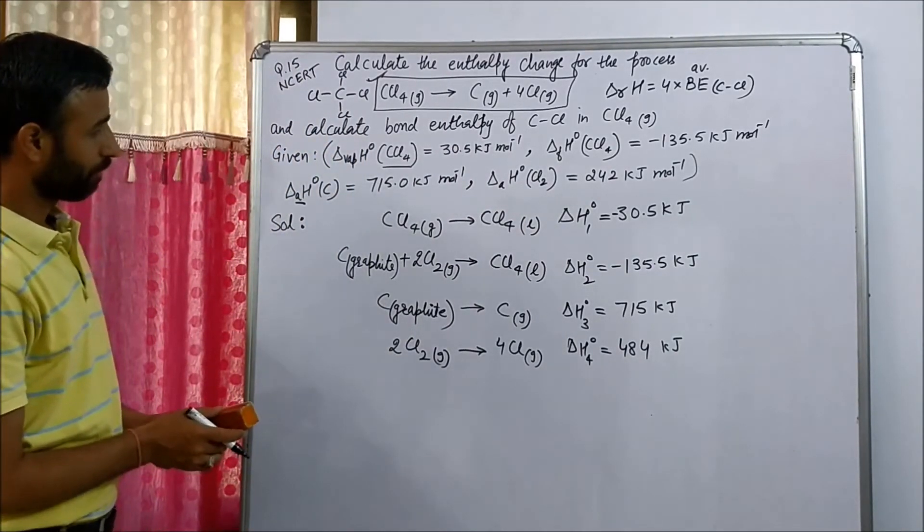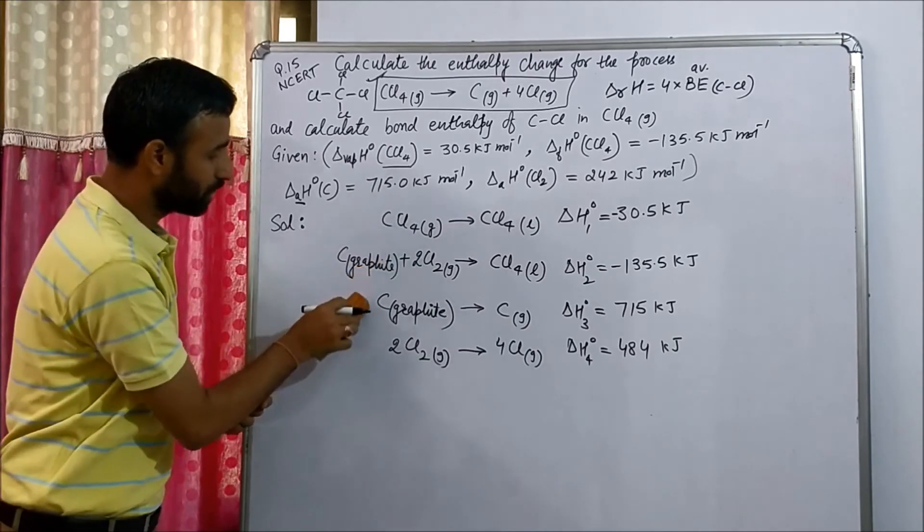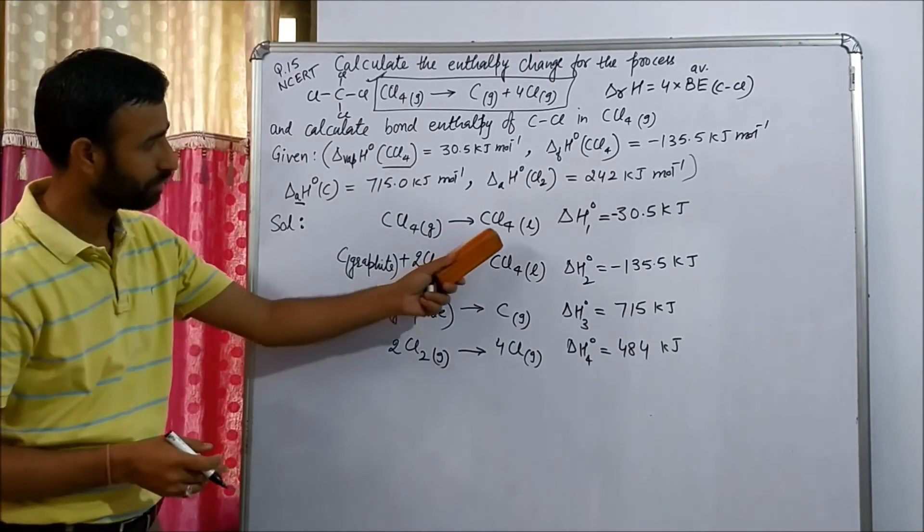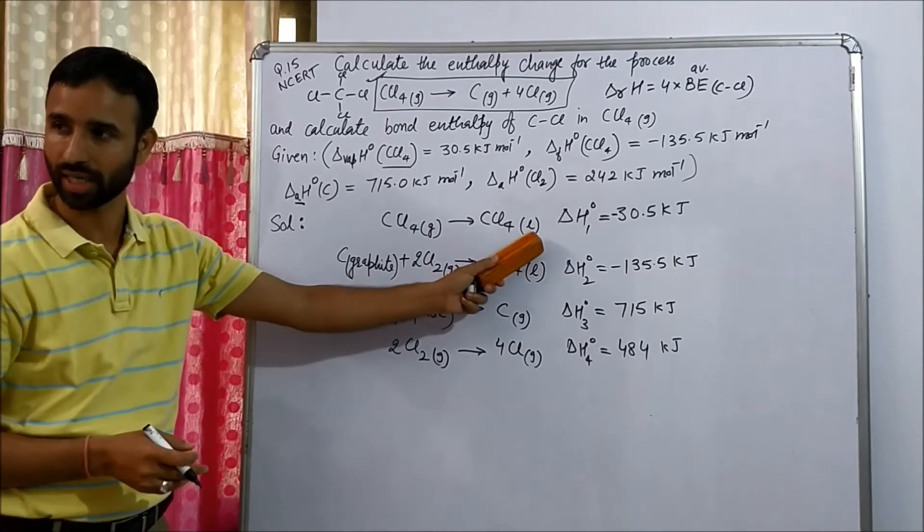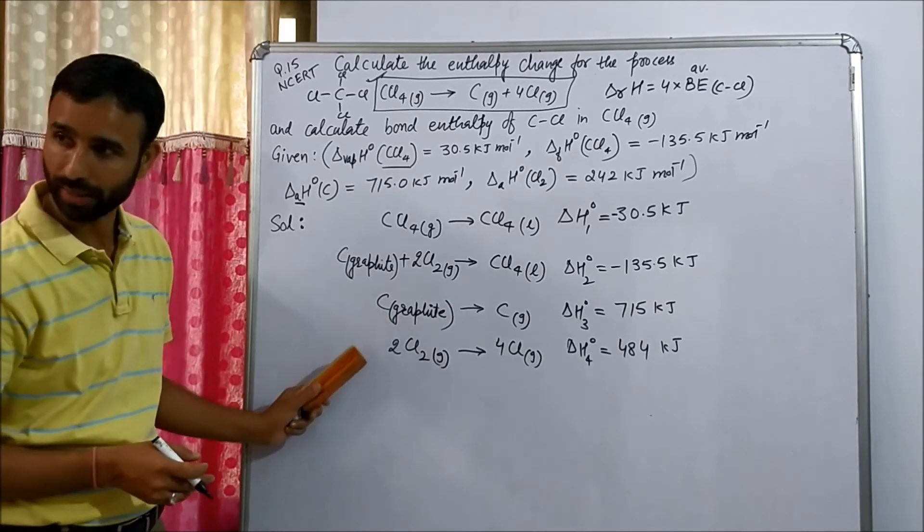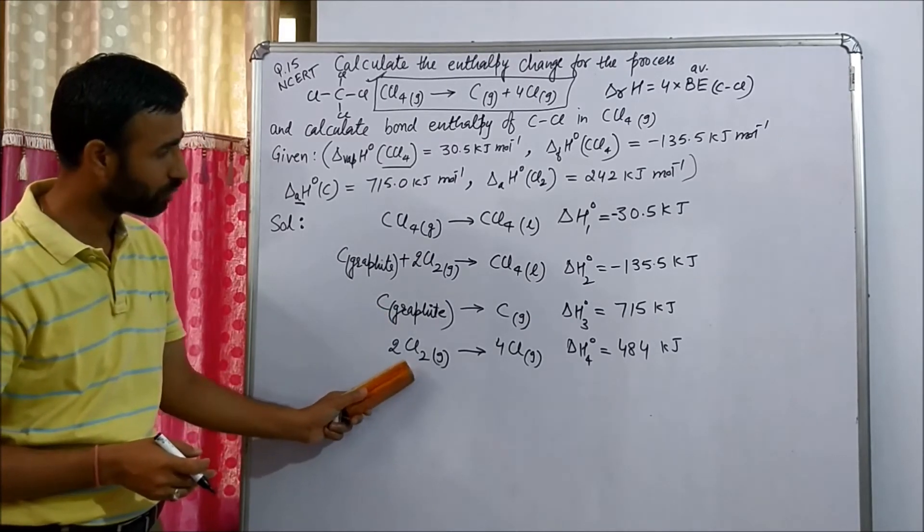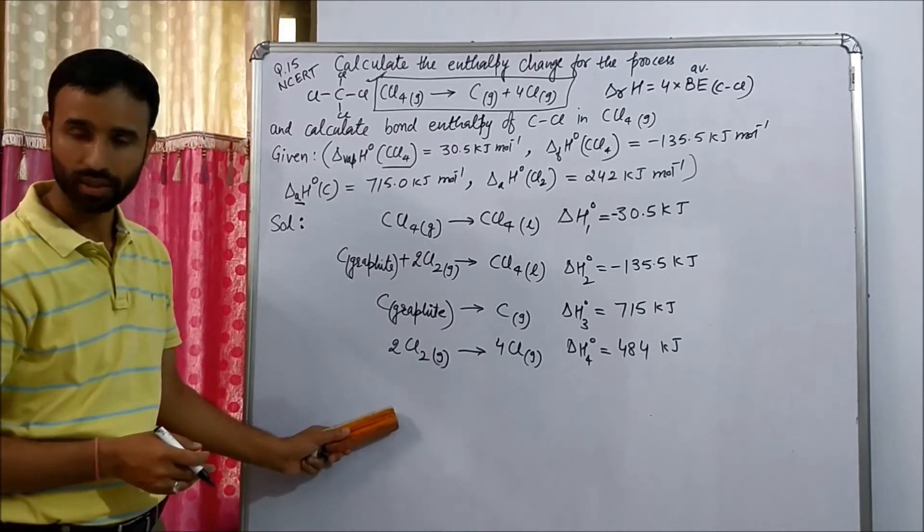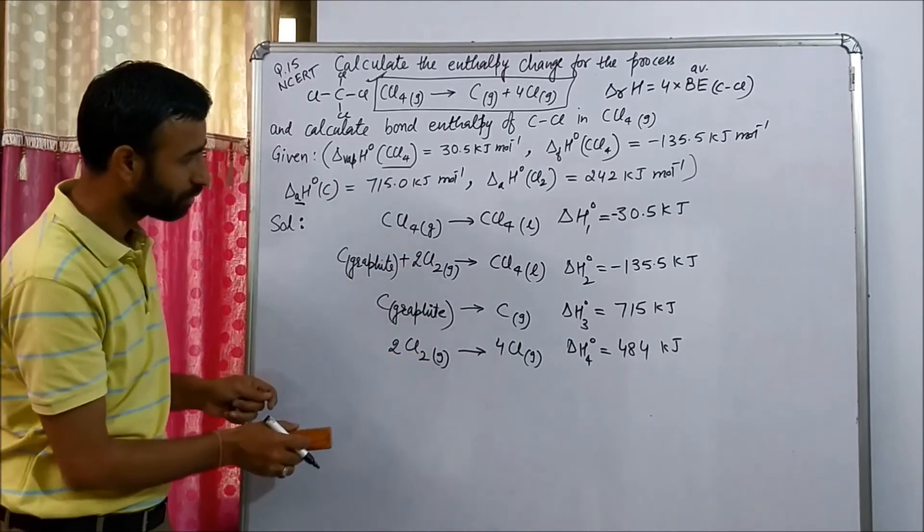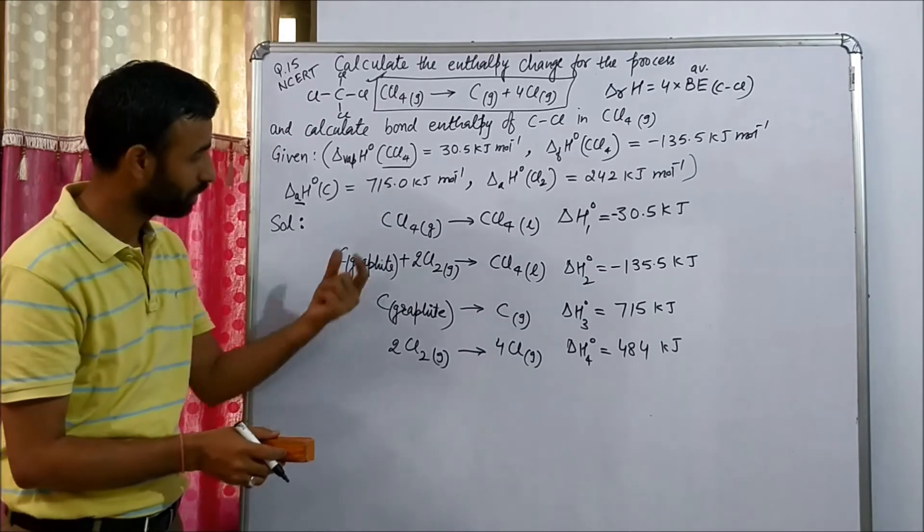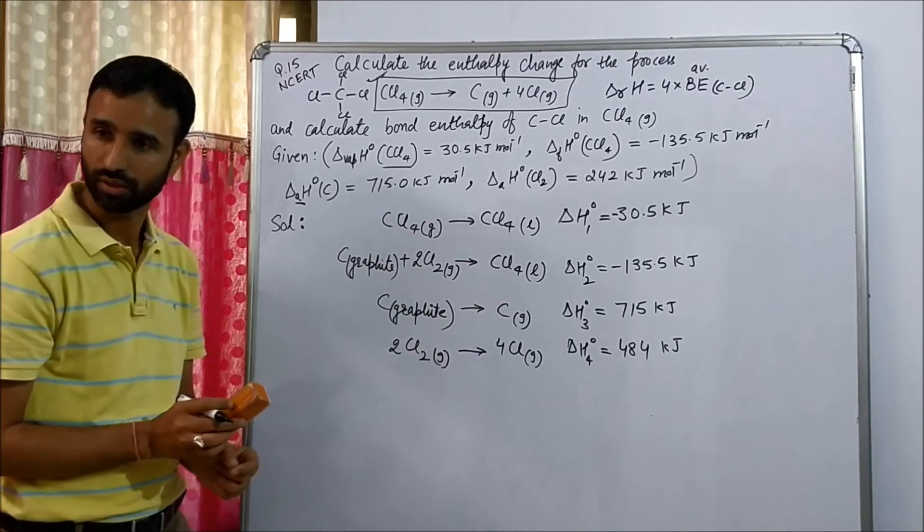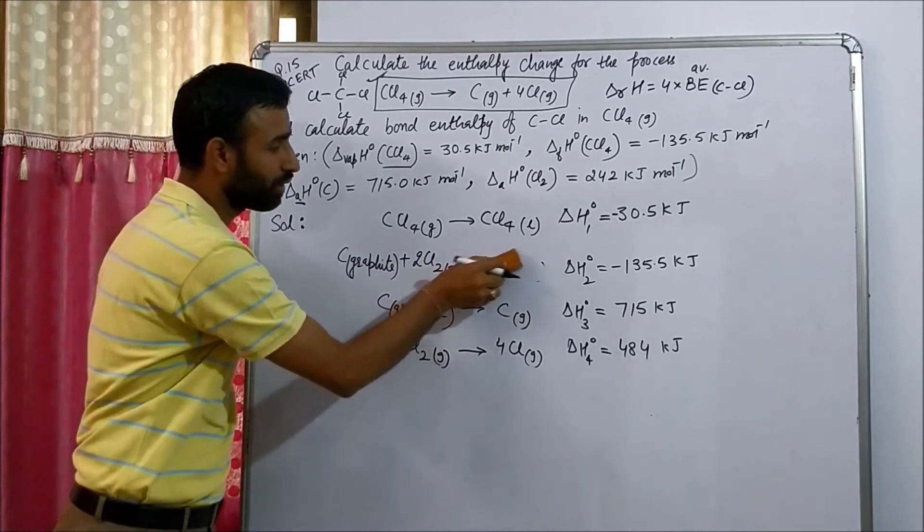Now when we add these three equations, what is extra we get? We get CCl4 liquid on right side, we get carbon graphite on left side, we get 2 Cl2 gas on left side that we have to cancel. So to cancel, what we have to do with this equation? We reverse the second equation.